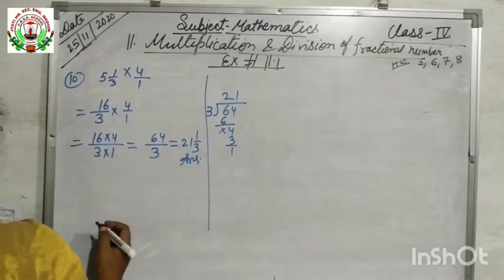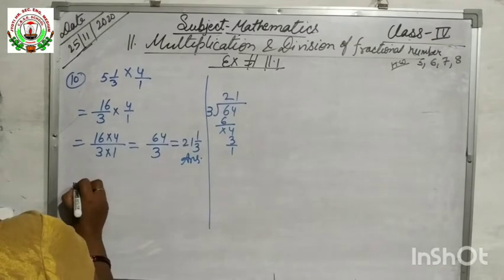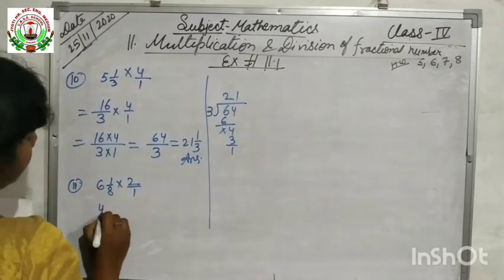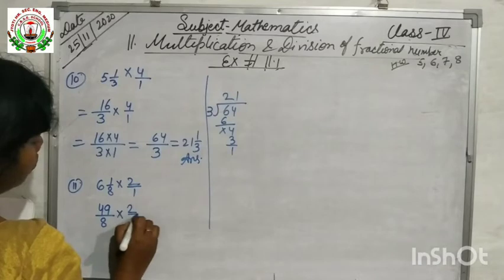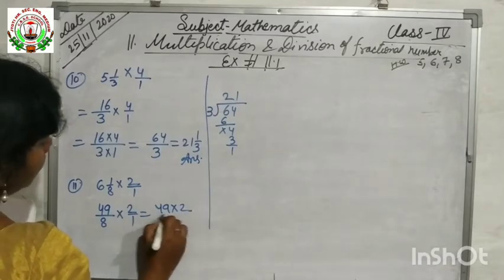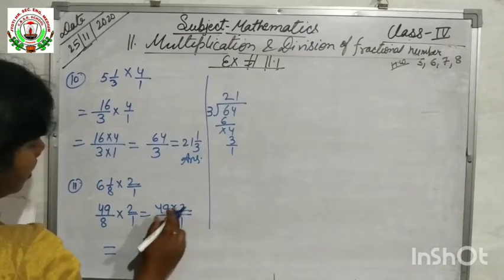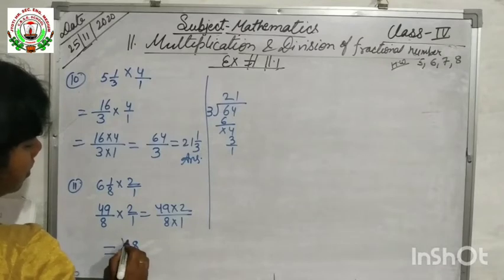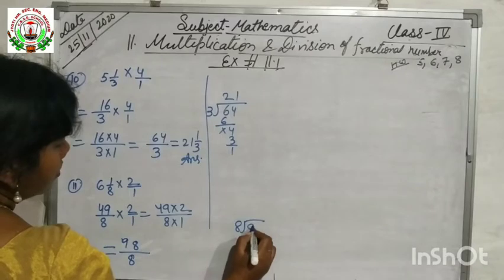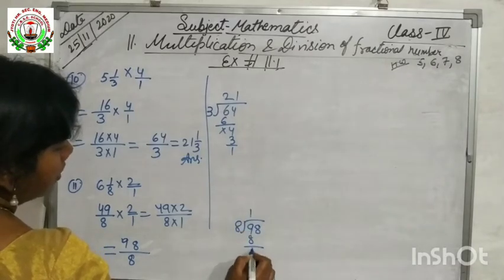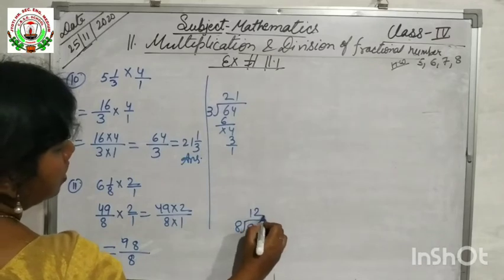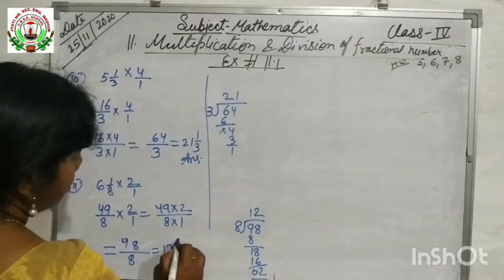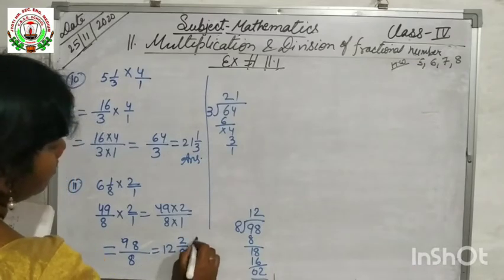Question number 11 is 6 and 1/8 into 2. Break the mixed fraction: 8 sixes are 48, 48 plus 1 is 49, so 49/8. Multiply by 2/1: 49 into 2 is 98, 8 into 1 is 8. Converting to mixed fraction: 8 twelves are 96, 98 minus 96 is 2. The answer is 12 and 2/8.